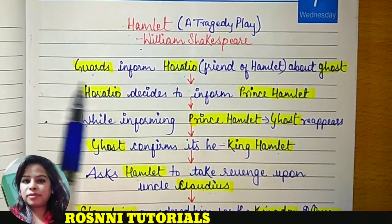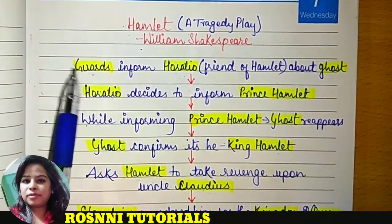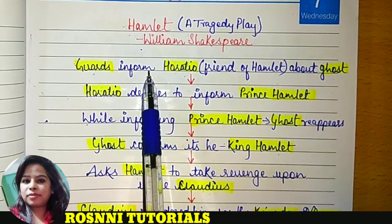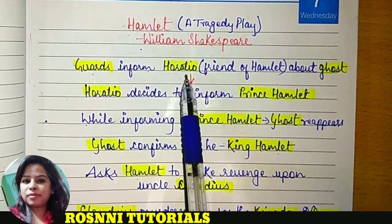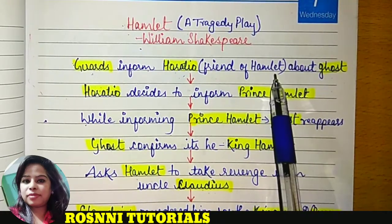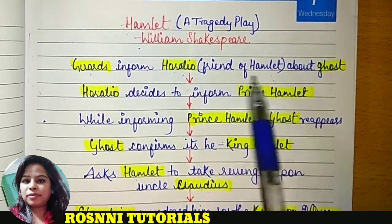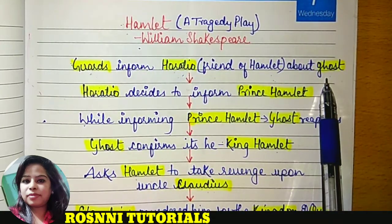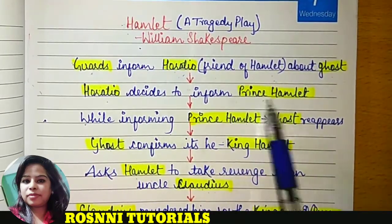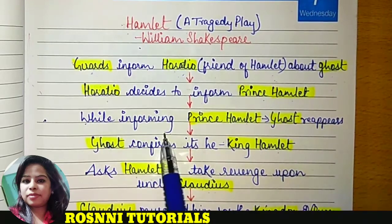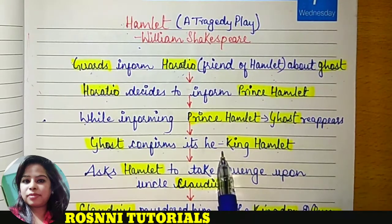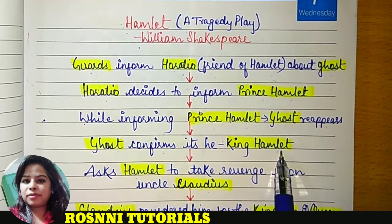At first we find guards of the castle of Denmark experiencing some weird things around them in the castle. They informed their entire experience to Horatio. Horatio is a main character and he is the best friend of Hamlet. Horatio decided to inform Prince Hamlet about the ghost. While informing Prince Hamlet, the ghost reappears. The ghost confirms it is King Hamlet, who used to rule the kingdom of Denmark.